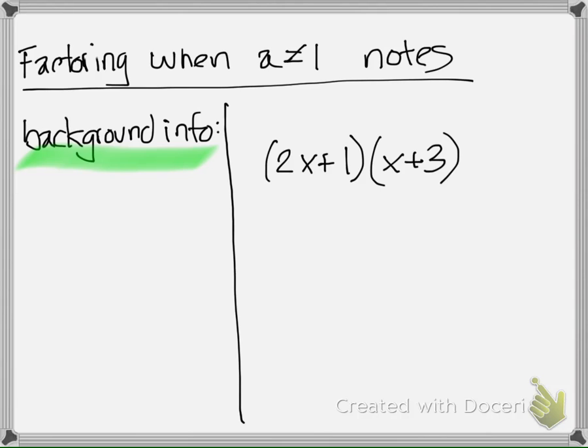Please go ahead and multiply out 2x plus 1 times x plus 3. You can use the distributive method or you can use FOIL, whichever you seem fit. Go ahead and pause the video now so that you can work out that problem and then hit play so you can see the solution.